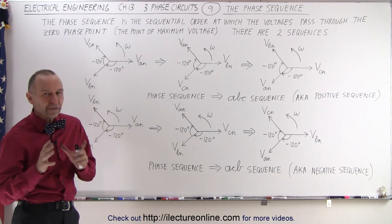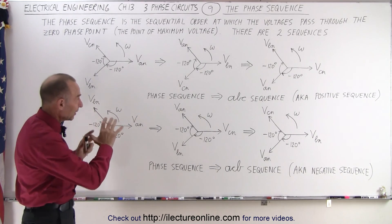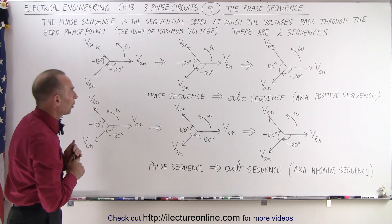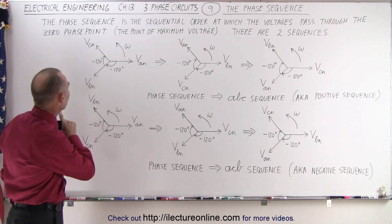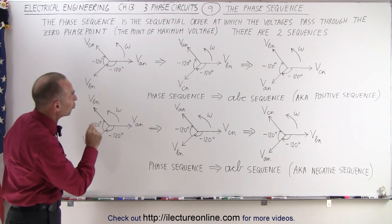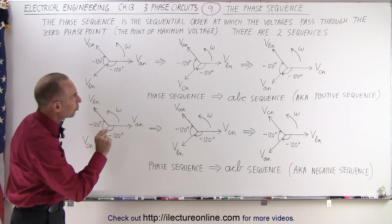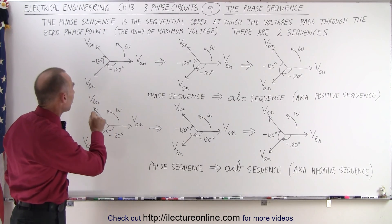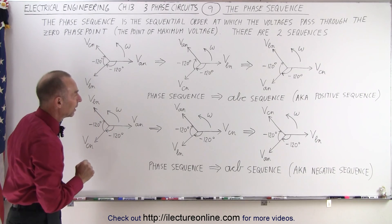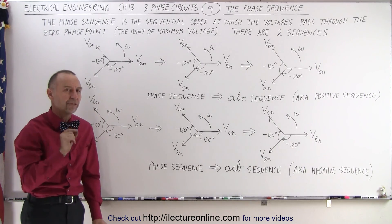It's kind of subtle, the difference between them, so we have to be very careful and take a close look at what we have on the board. First of all, let's read the definition. The phase sequence is the sequential order at which the voltages pass through the zero phase point, the point of maximum voltage, and therefore there are two different sequences.